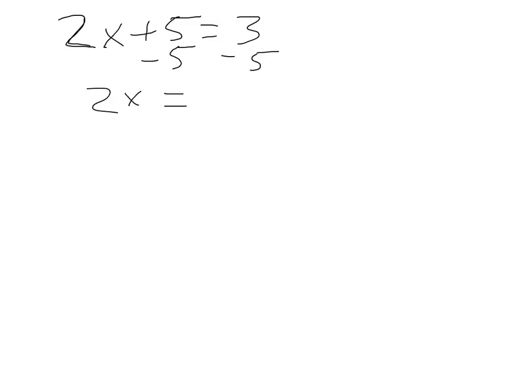So we get 2x is equal to negative 2, and then we solve for x, which gives us x is equal to negative 1. Fairly straightforward — that's algebra.